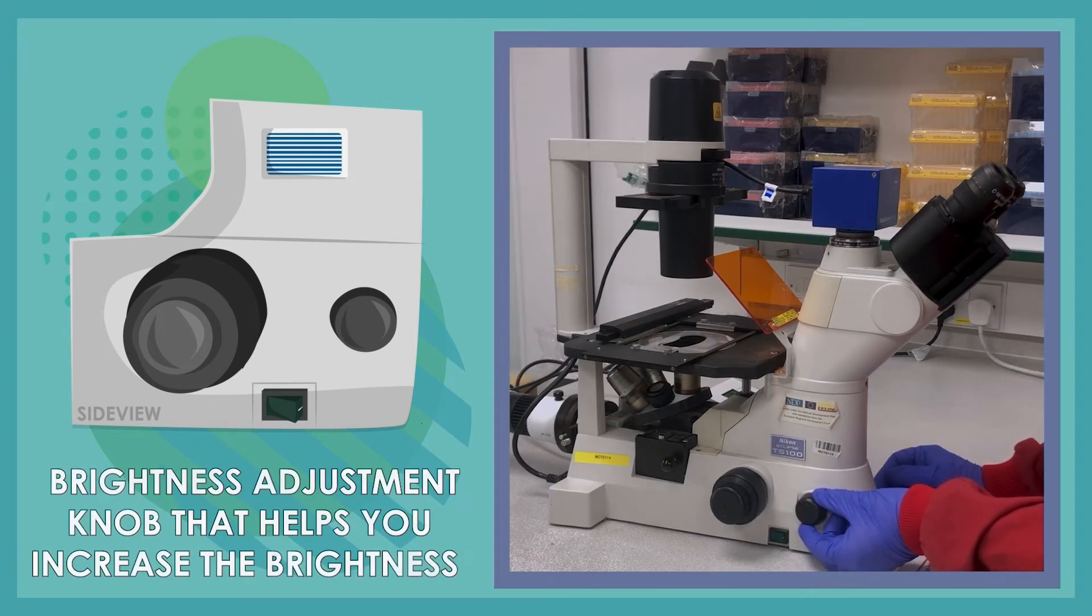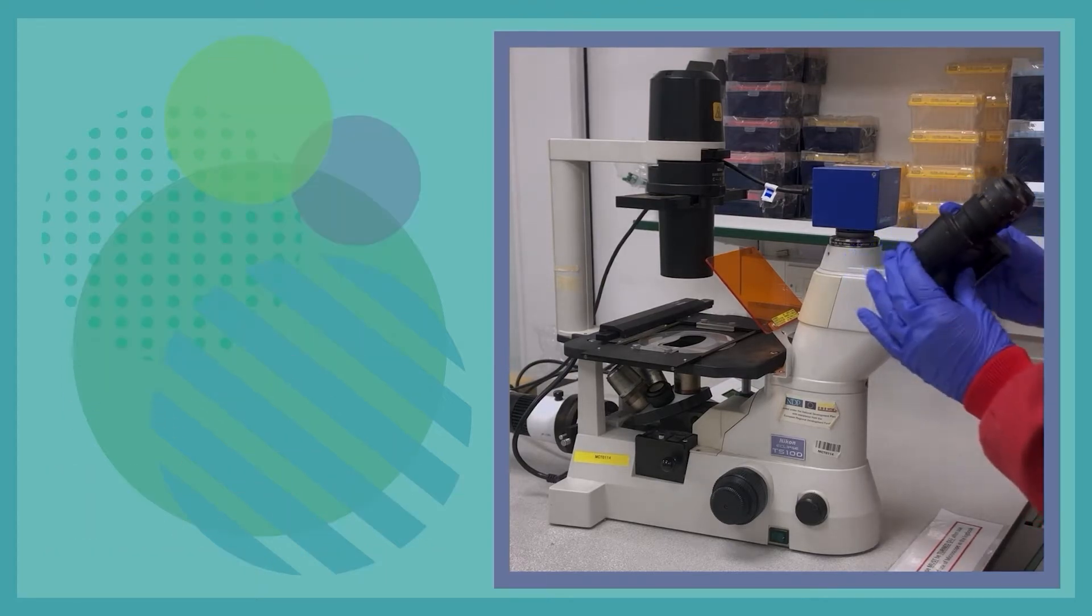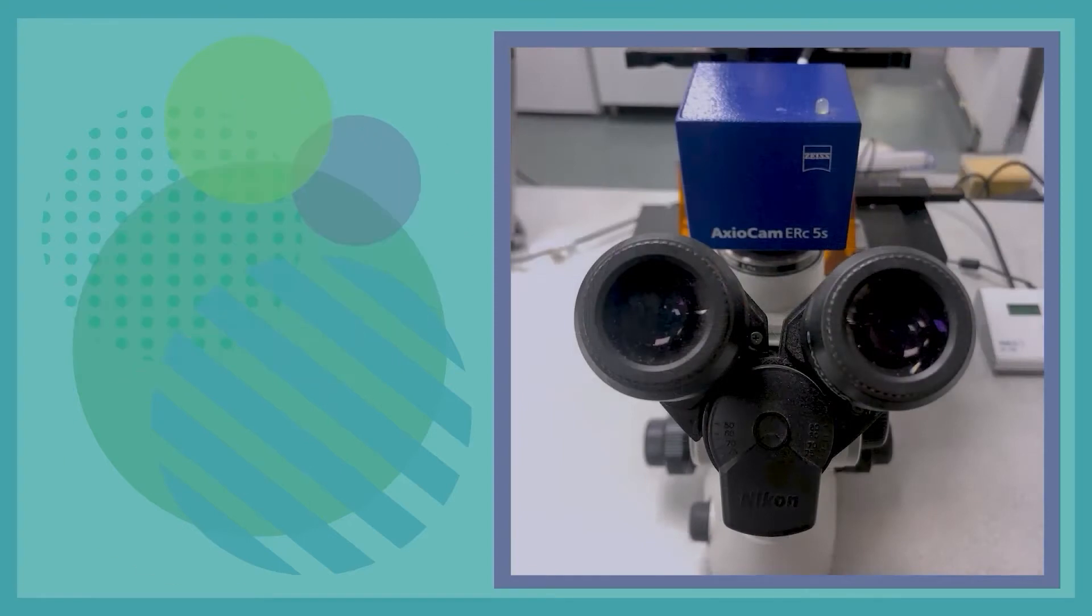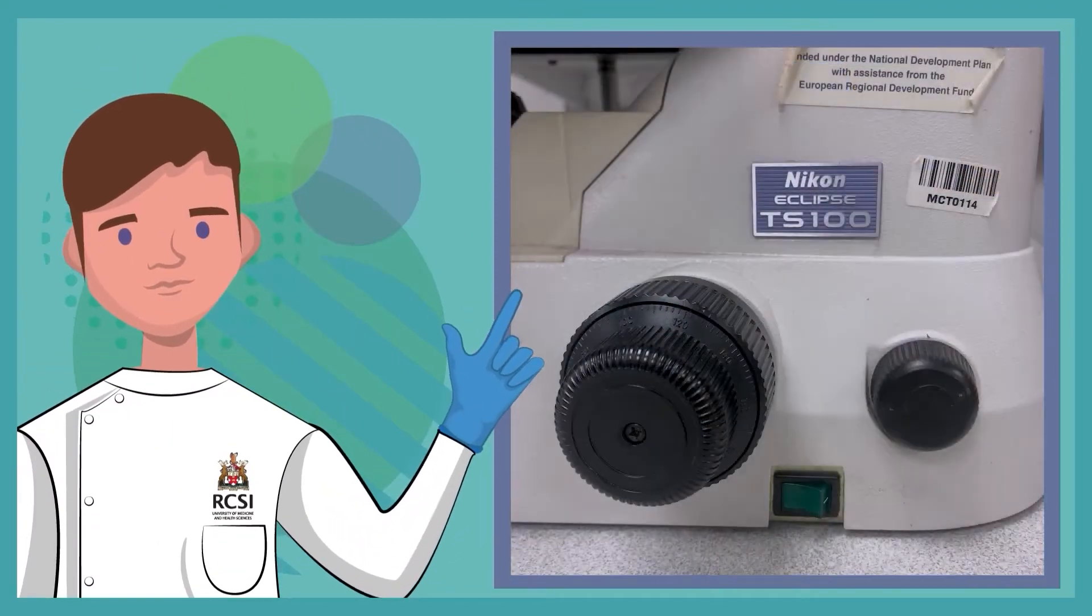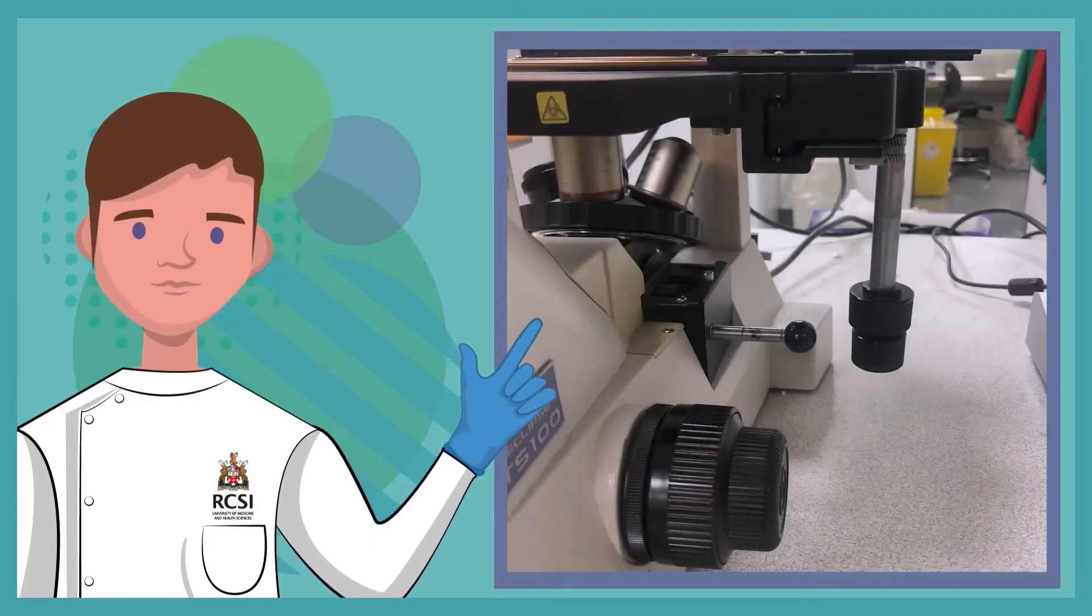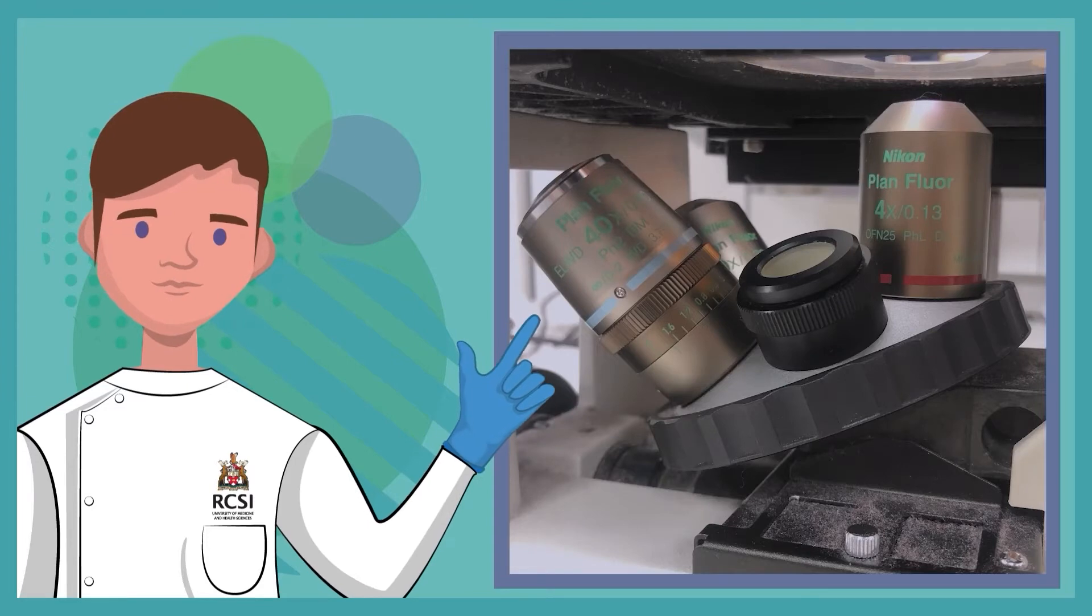We also have the brightness adjustment knob which helps you increase the brightness, and finally we have the objective eyepieces which can be adjusted for each user. While these are the primary parts of a tissue culture microscope, the following image offers a more detailed list of individual components that are also important to know.